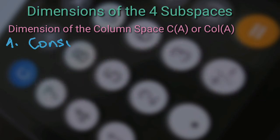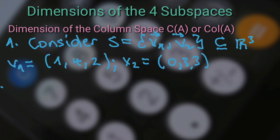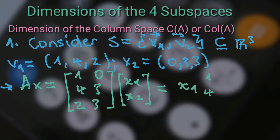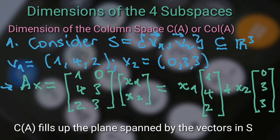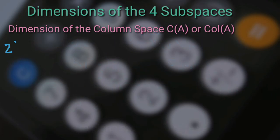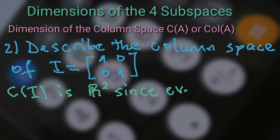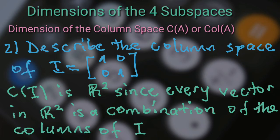Example: consider the set S = {v1, v2}, which is a subspace of R cube, where v1 equals (1, 4, 2) and v2 equals (0, 3, 3). Let A be the 3 by 2 matrix with columns which are the vectors in S. The column space of A fills up a plane in R cube. It is a plane spanned by the vectors v1 and v2. The column space of the identity matrix I is R squared, since every vector in R squared is a combination of the columns of I.